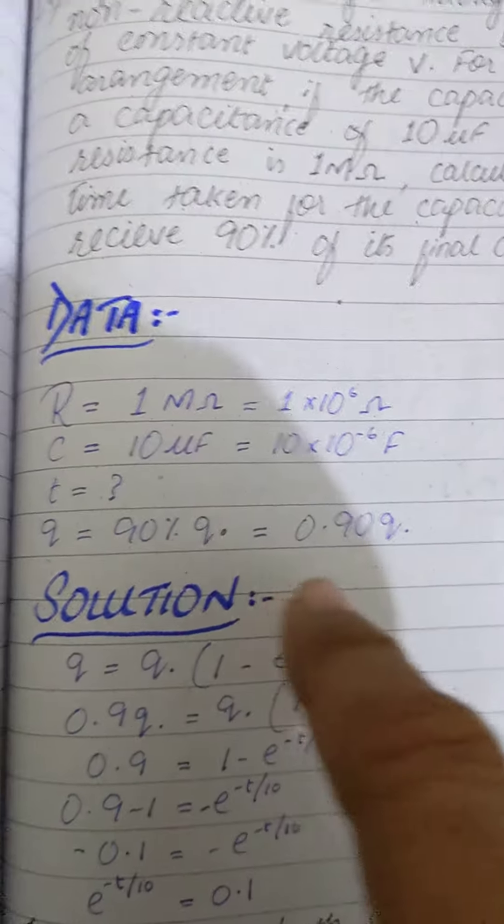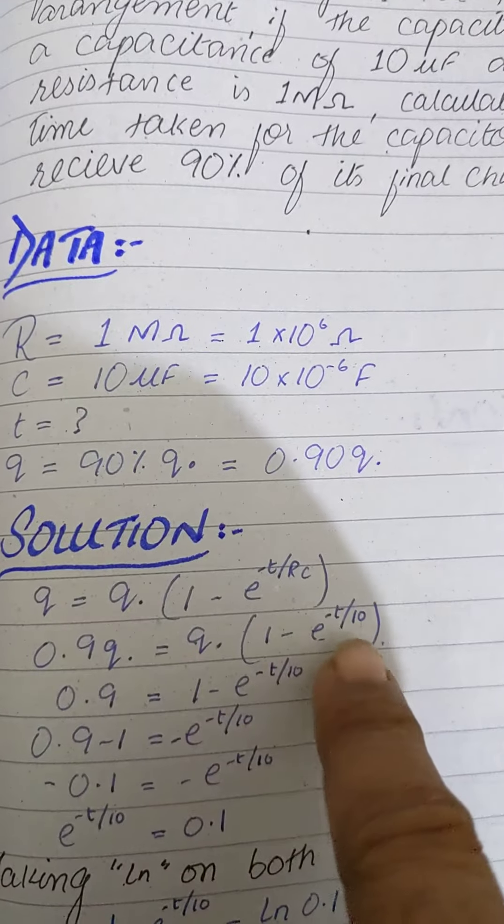10 to the minus 6 plus 6 cancel, tens of 10, 10, 10.